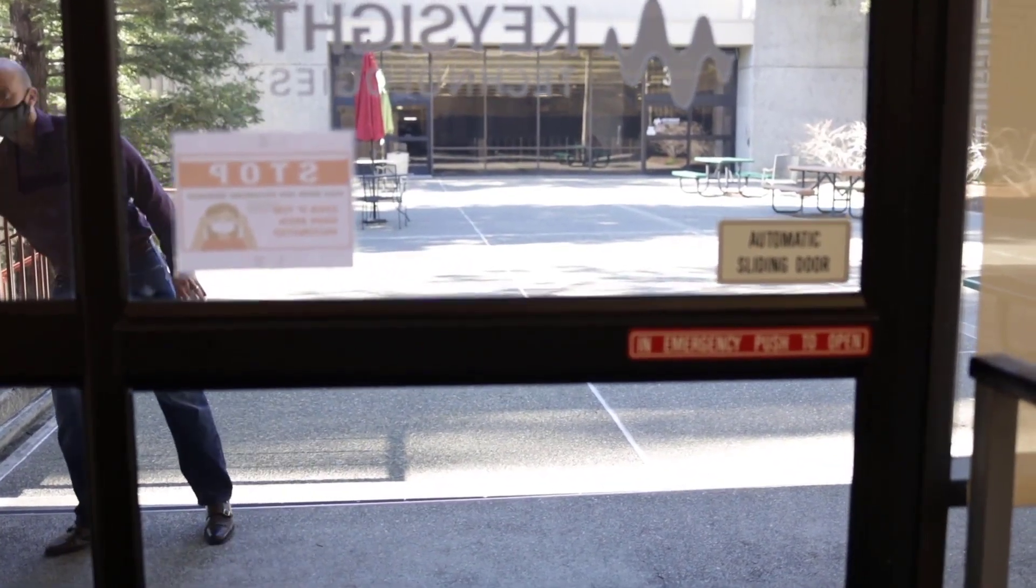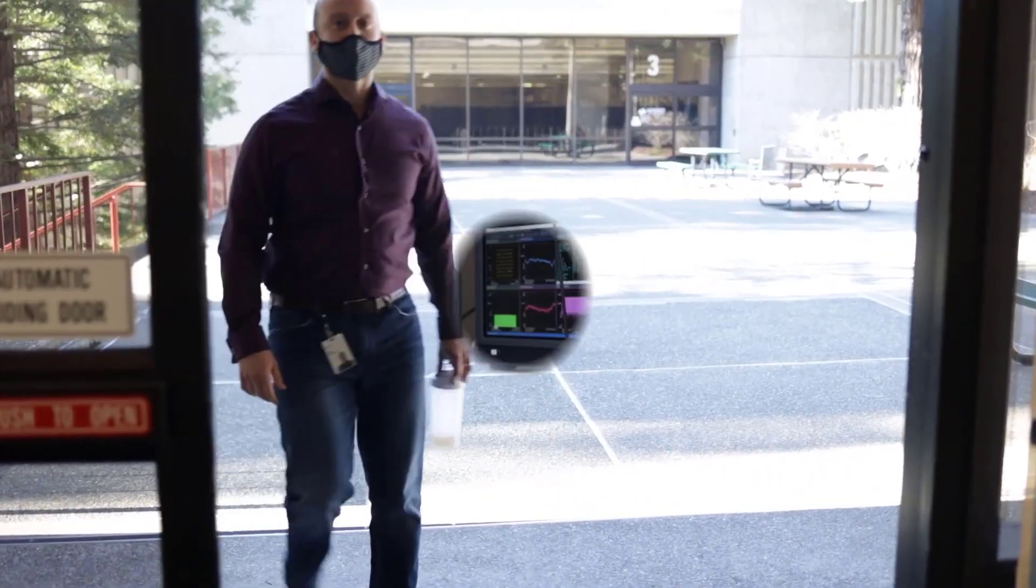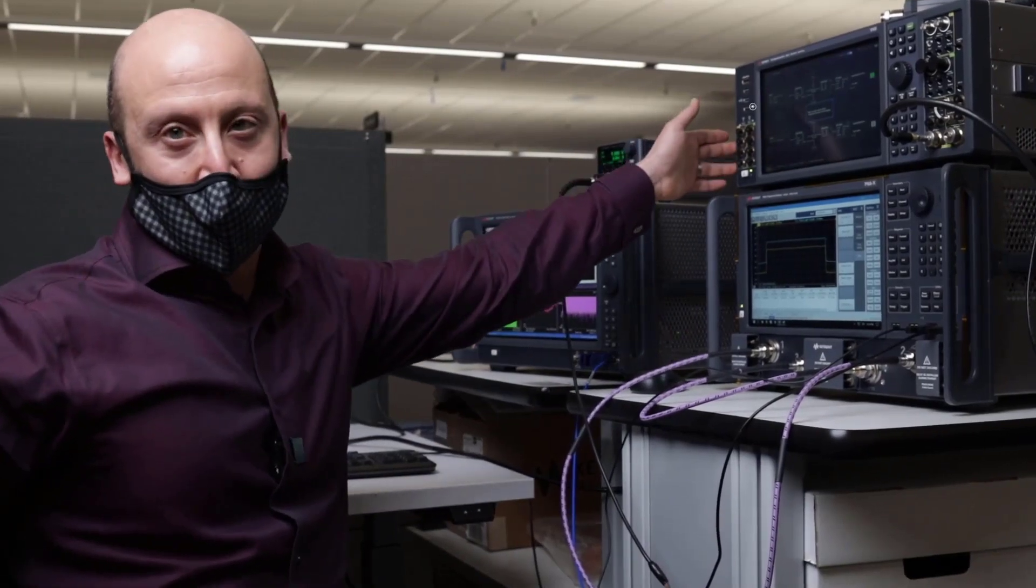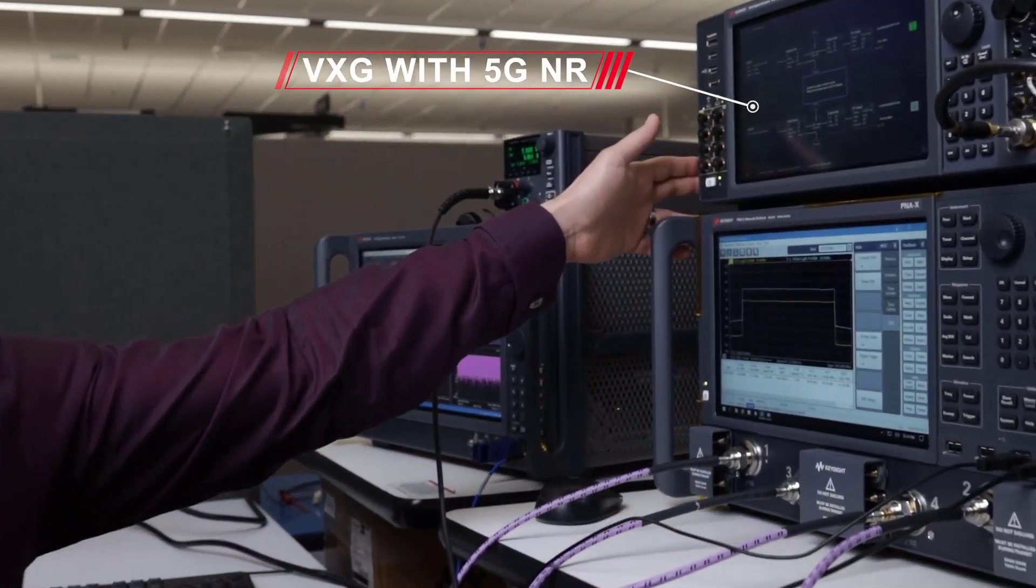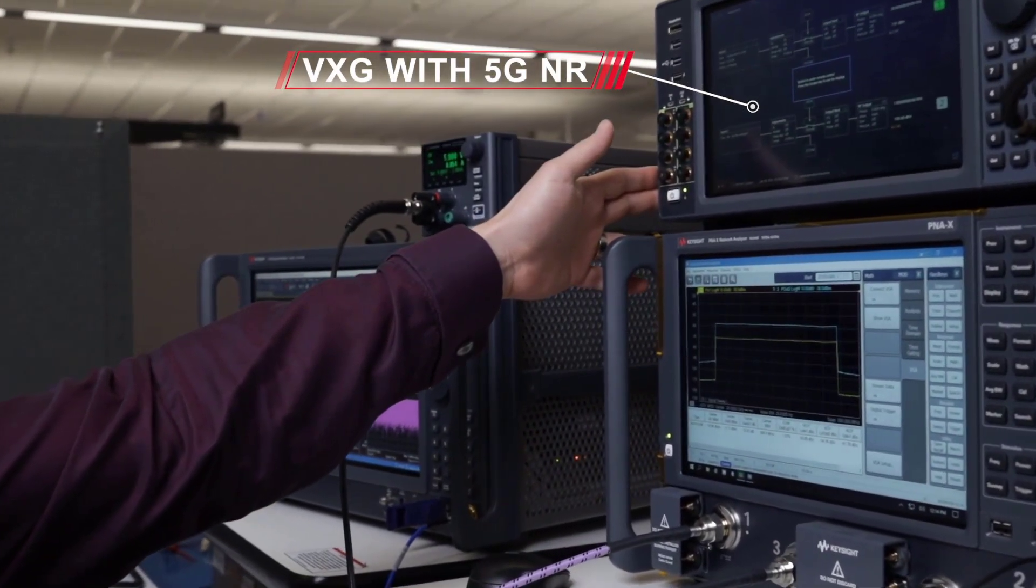Now that we've learned about it, let's go take a look at these signals in the lab. Here we have the VXG, which we're using to generate 5G NR signals at FR2, 400 MHz, one component carrier.